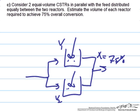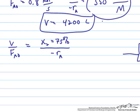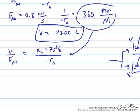Because of that we can again use our same expression, so V over FA0 is equal to X2 in this case, which is equal to 75%, over negative rA. In this case we again use 350 minutes per molar for 1 over negative rA, remembering we need to change units from minutes to seconds by multiplying by 60. FA0 is the same as 0.8 moles per second, so we have everything we need here to solve for the volume.